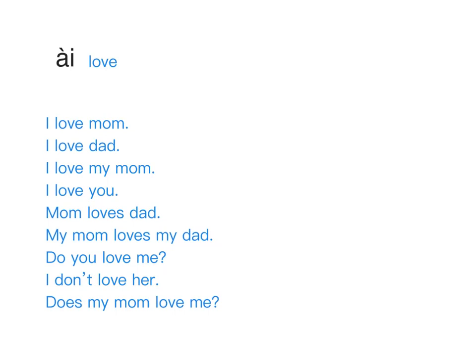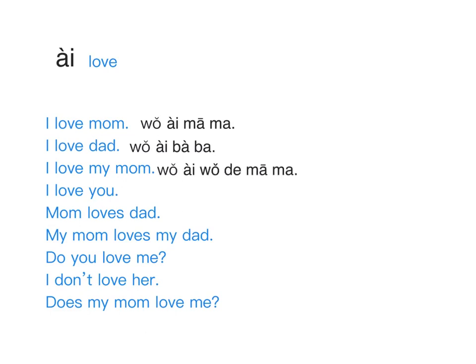Now let's try some sentences. How would you say 'I love mom'? 我爱妈妈。 I love dad: 我爱爸爸。 I love my mom: 我爱我的妈妈。 I love you: 我爱你。 When you're beginning, you don't need to say things very quickly, but try to say it smoother: 我爱你。